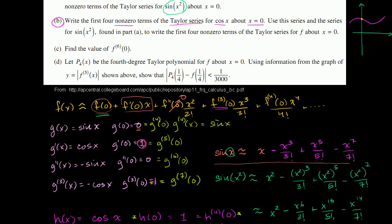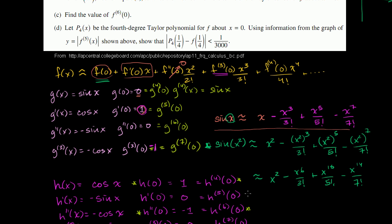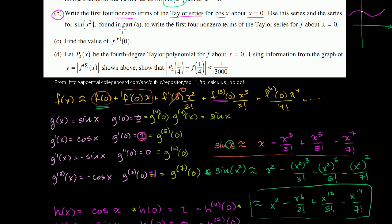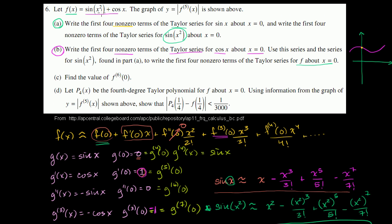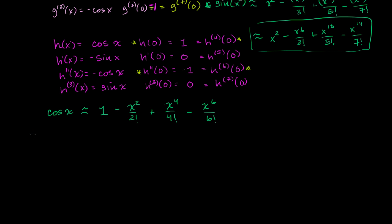Now let's do the second part of the problem. Use the cosine series and the series for sine of x squared — which we found in Part A — to write the first four non-zero terms of the Taylor series for f about x equals 0. Our function is sine of x squared plus cosine of x, so f of x equals sine of x squared plus cosine of x.